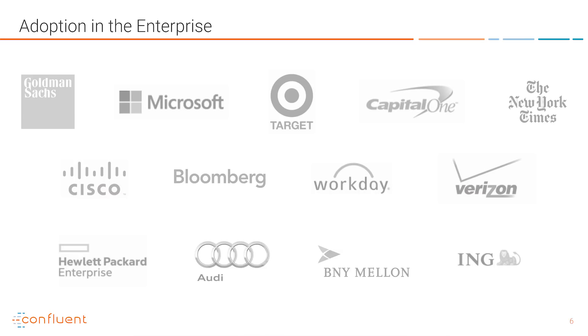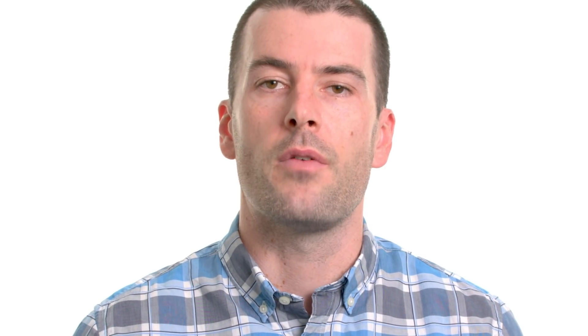To get a sense for how these companies use Kafka, let's look in more depth at a few use cases in three very different industries, each of which is going through a significant transition as they focus on reimagining their company in software. This will let us see how events and event streams are at the heart of the modern architecture these companies are evolving towards.